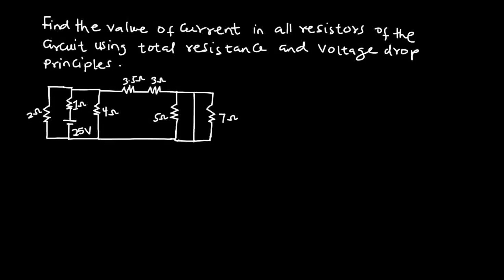In this lesson we will solve a question: find the value of current in all resistors of the circuit using total resistance and voltage drop principles. To calculate the current in each resistor, we first need to find the total current in the circuit, and to do that, we must first calculate the effective resistance of the circuit.